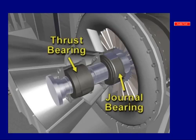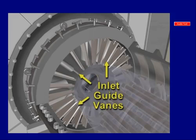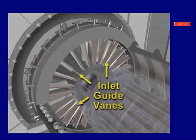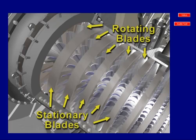The inlet casing also provides access to the thrust bearing and the inlet journal bearing. Variable inlet guide vanes are located in the inlet casing directly in front of the first row of compressor blades. The vanes are used to regulate the amount of air entering the compressor.